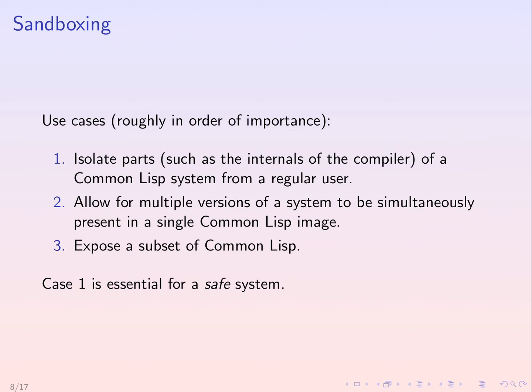Specifically for sandboxing, I can see at least three use cases, roughly in order of importance for this presentation. The first use case is to isolate parts of a Common Lisp system from a regular user — for instance, the internals of the compiler. We would not want it to be possible to download a system from Quicklisp that could then insert a Trojan horse in the code generator of the compiler. The second use case is to allow multiple versions of a system to be simultaneously present in a single Common Lisp image. A user might want to install two systems A and B, but A and B both use system C and require different versions of it. Sandboxing solves this by putting A and B in separate first-class global environments.